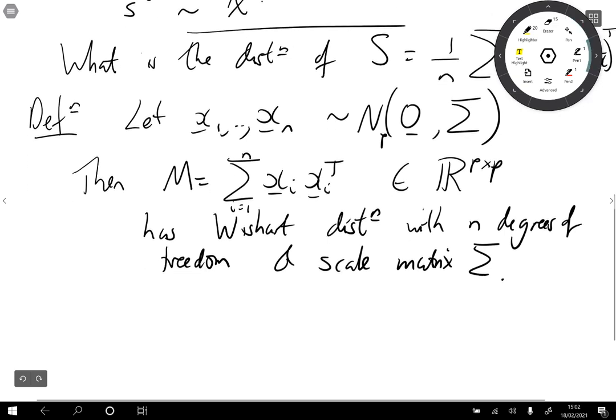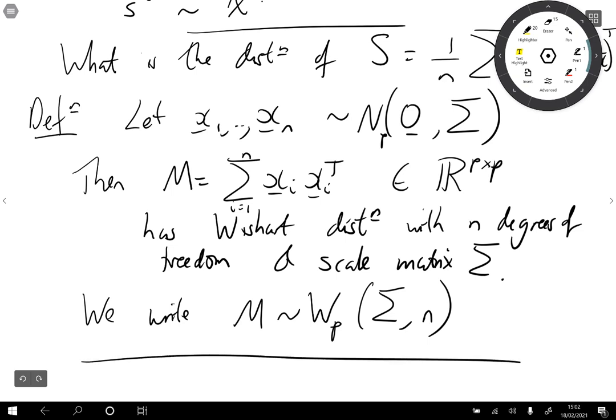We write that M twiddles, W for Wishart, p dimensions, scale matrix sigma and n degrees of freedom. So we're going to use the Wishart distribution to characterize the distribution of the sample covariance matrix.